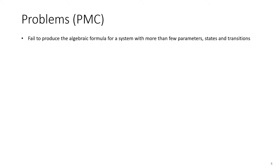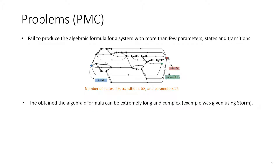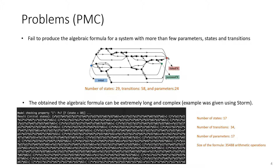However, PMC has not been widely used in real practice due to its scalability issue. For example, the current PMC failed to produce expressions for a relatively small model. For a simpler model, it may be able to return the expressions, but the expression can be very long and complex, which may not be practical to process at runtime. This screenshot shows a small part of the result returned by STORM for a model with only 17 states and 17 parameters — the returned expression has more than 35,000 operations.